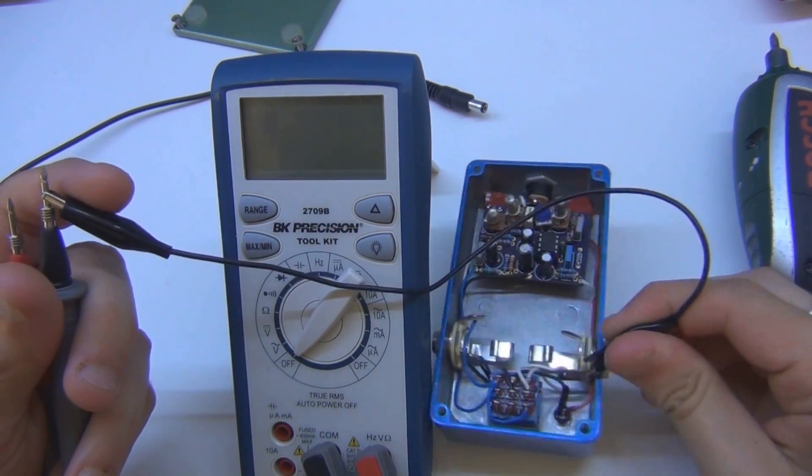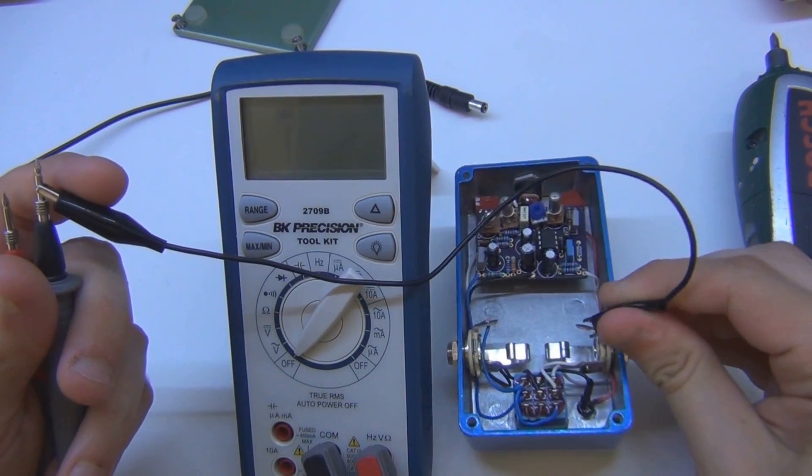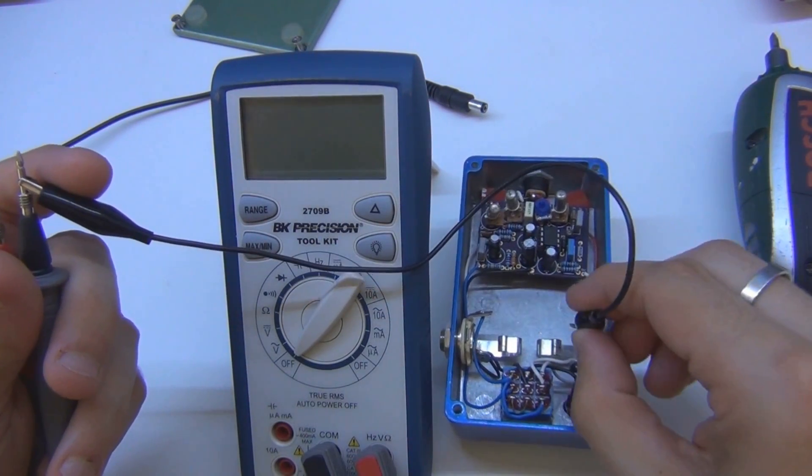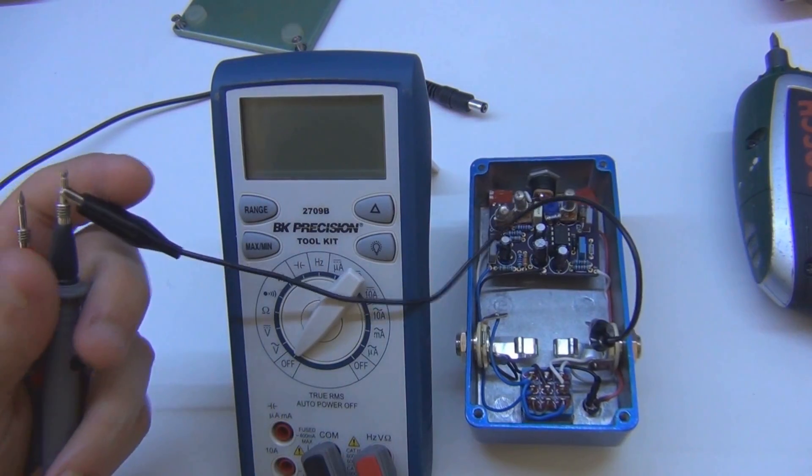So just connect it. Make sure you pick the right one. That's the tip. You don't want to connect it to the tip. You want to connect it to the shield of either of those jacks. They're both connected to ground.